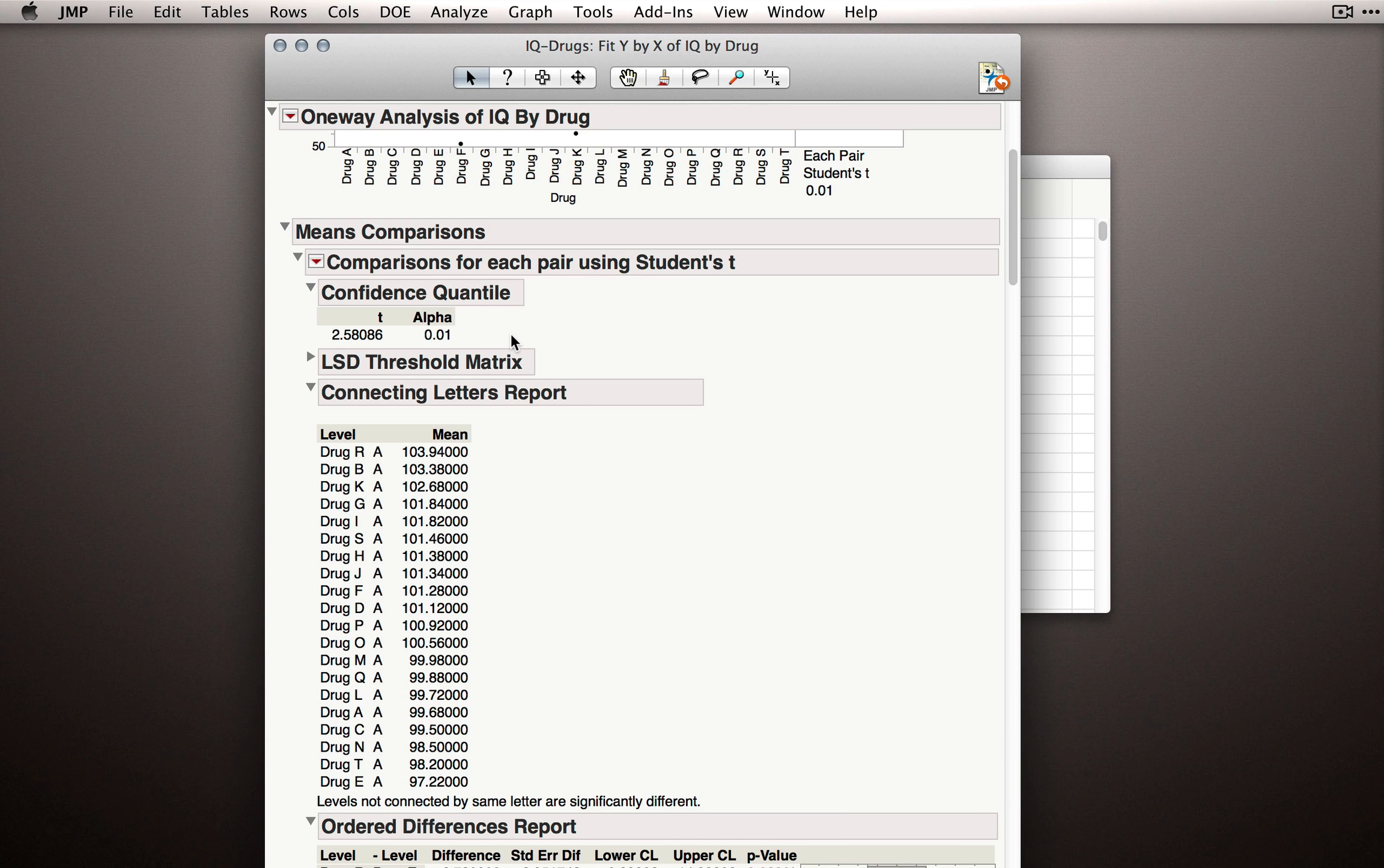So given that correction, we are now licensed to look at five specific tests. That is, we can look at drug A versus drug B, C, D, E, and F. And based on our Bonferroni correction, we can be sure that if the null hypothesis is true, we won't false alarm on one or more of those more than 5% of the time. That's what our Bonferroni correction allows us to say.